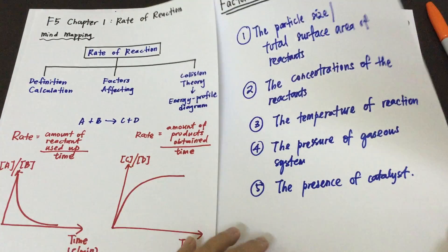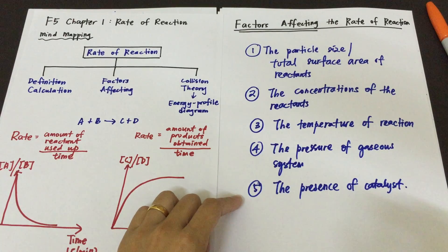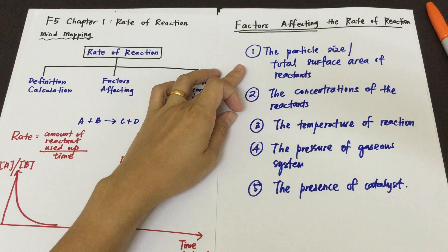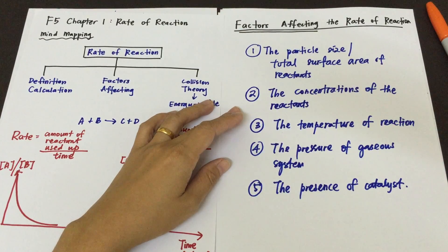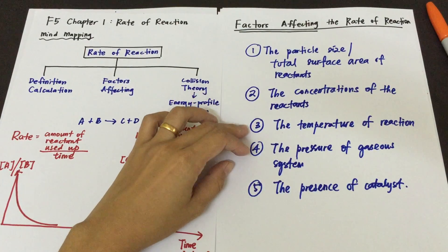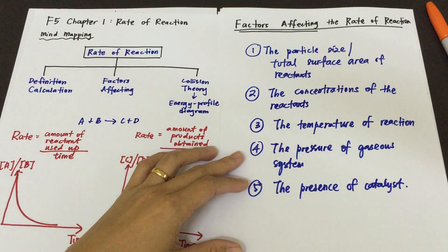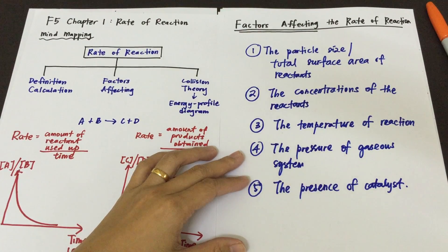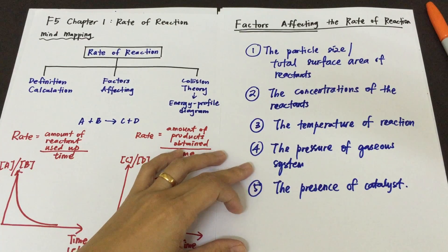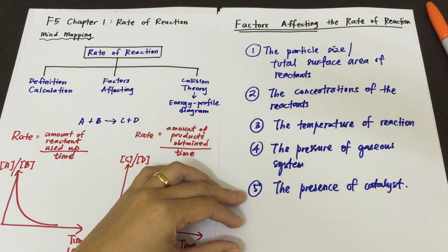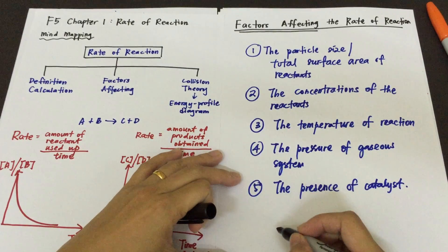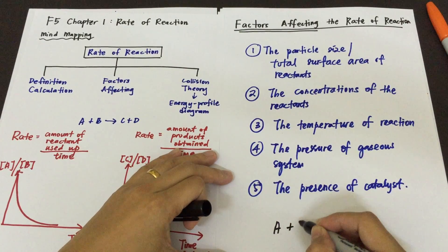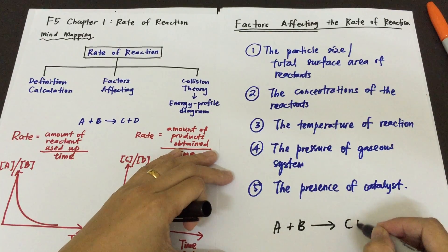There are actually a total of five factors common in the syllabus on the rate of reaction. The first factor will be the particle size or the total surface area of reactants. The second one will be the concentration of reactants, and the third one will be the temperature of the reaction. The fourth one will be the pressure of gaseous systems, and the fifth one will be the presence of a catalyst. All five factors depend on a common reaction, for example, A plus B to give C plus D.